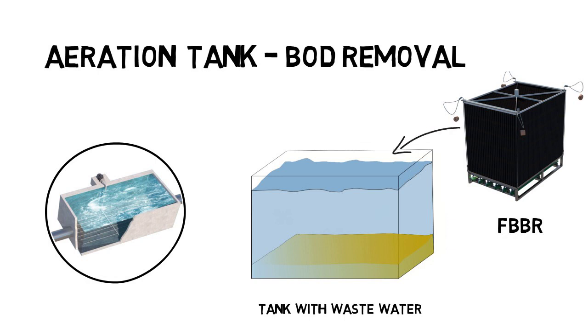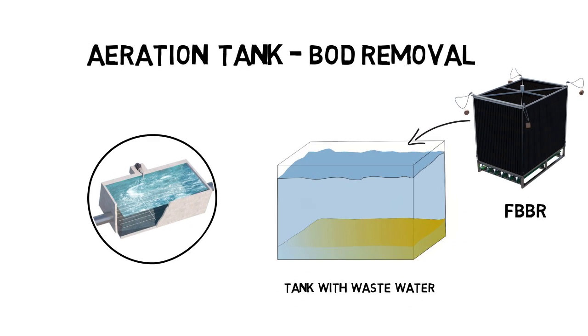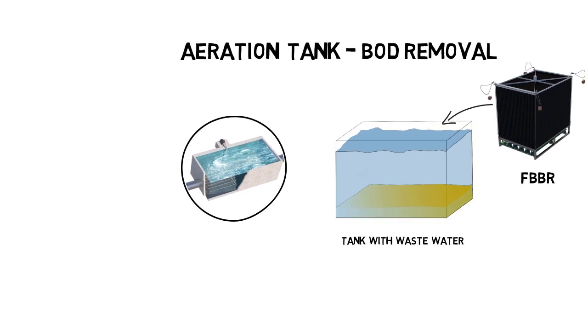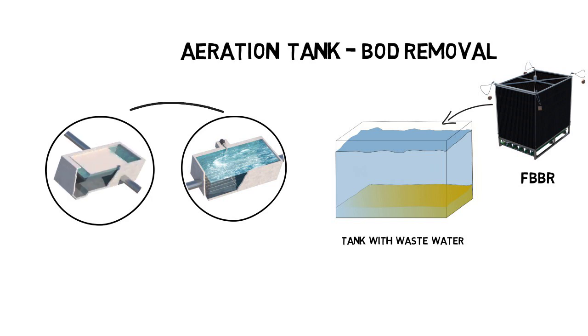The produced sludge in the aeration tank is passed through a secondary clarifier for settling and aging. Afterwards, sludge is recirculated into the aeration tank as food for the microbes.